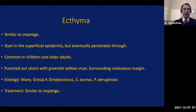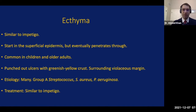Ecthyma is the next topic. It is similar to impetigo initially; however, it invades into the superficial dermis as the process progresses. It is also more common in children, though it can be seen in older, especially immunocompromised, adults. The differentiating factor from impetigo is that the ulcers are deeper — presenting as punched-out ulcers — with a greenish-yellow crust surrounded by a violaceous margin. Common etiologies include Group A Streptococcus, Staphylococcus aureus, and Pseudomonas aeruginosa, which causes ecthyma gangrenosum. Treatment is similar to impetigo.